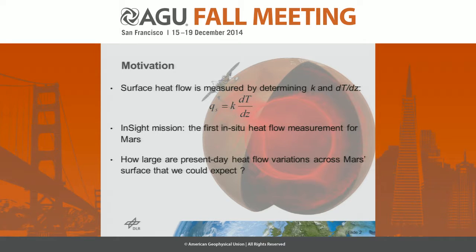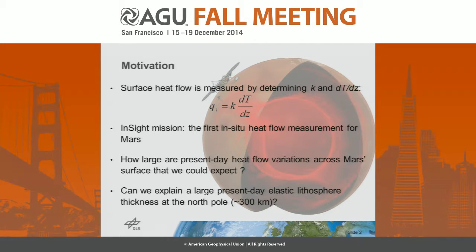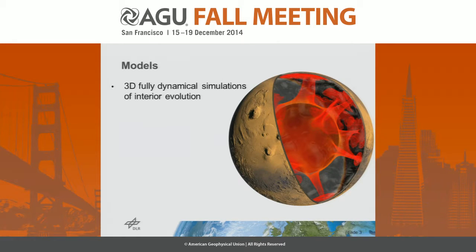To answer the question of heat flow variation over the Mars surface at present day, we have performed a large number of numerical simulations. Another question we address in this study is: can we explain the large elastic thickness at the North Pole, inferred by previous studies to be around 300 kilometers? Can we compute this from our models and find a model that satisfies this constraint?